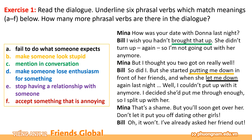D: make someone lose enthusiasm for something — làm cho ai đó mất sự hứng khởi về điều gì đó — đó là 'put you off'. E: stop having a relationship with someone — dừng một mối quan hệ với ai đó — chúng ta sẽ có 'split up with'. Và cuối cùng, F: accepting something that is annoying — chấp nhận một điều gì đó rất khó chịu — đó là 'put up with'. Đây là 6 cụm động từ có ý nghĩa tương ứng với những ý nghĩa từ A đến F.